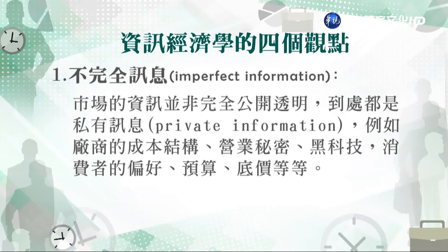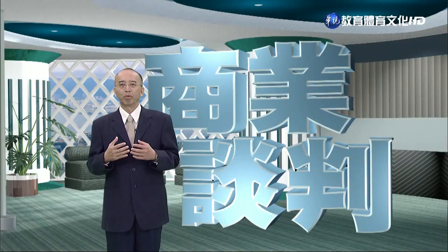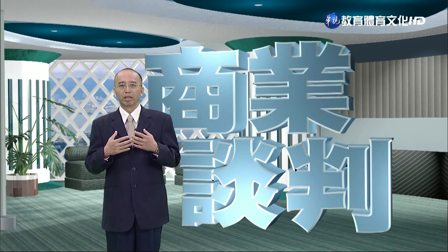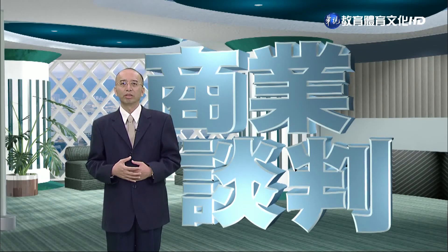私有訊息包括例如廠商的成本結構、廠商的營業秘密，還有所謂的黑科技——就是很難被外界理解、非常先進難以理解的科技應用——或者是消費者的偏好、預算底價等等。這些都是私有的訊息，談判者當然會盡量保持不讓對手收集到這些資訊。